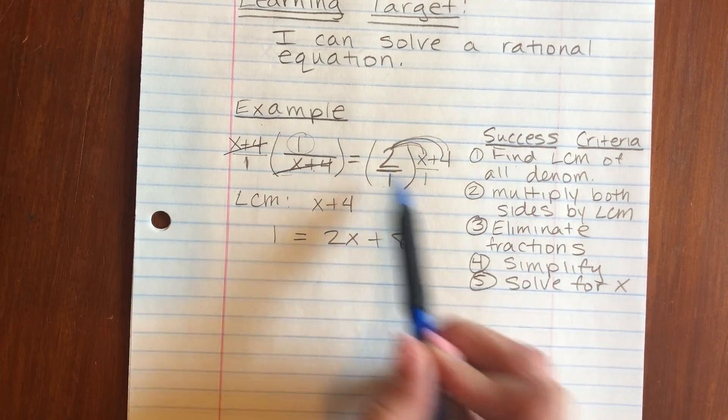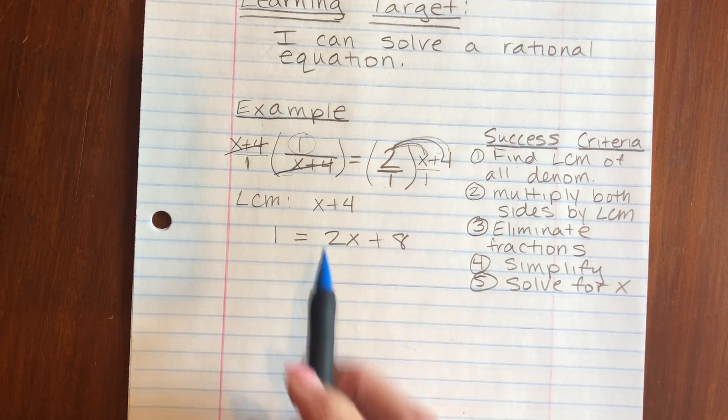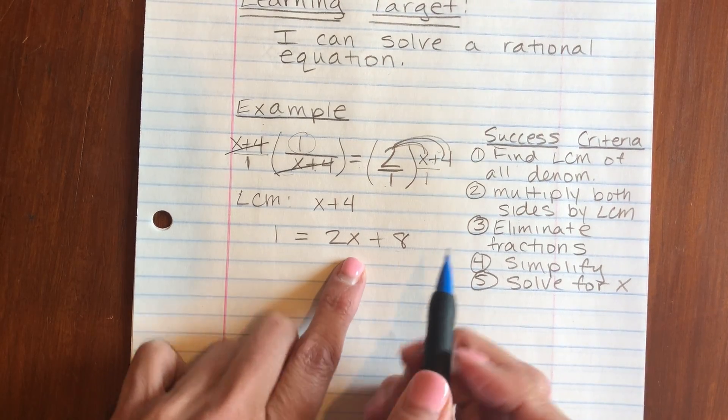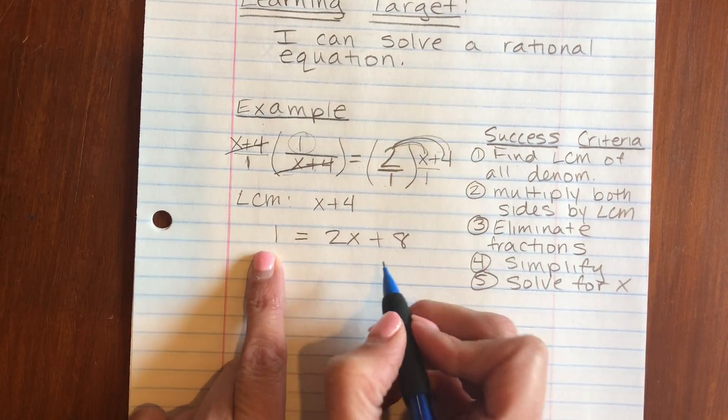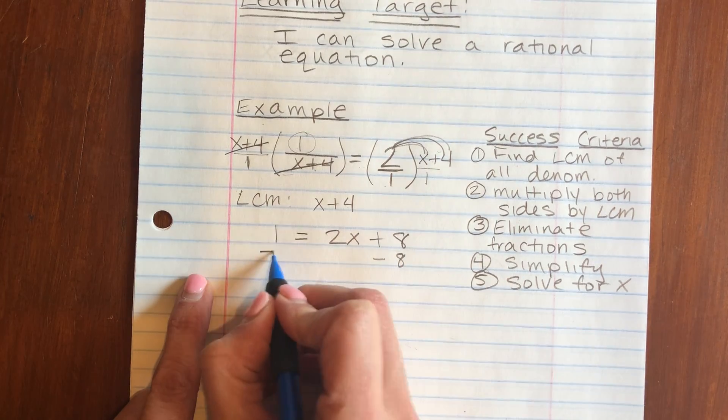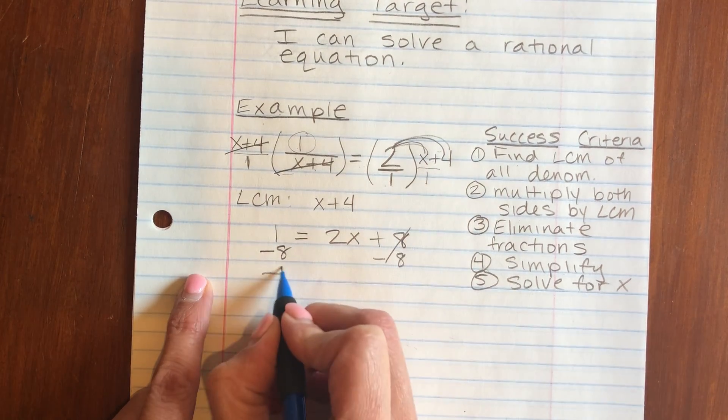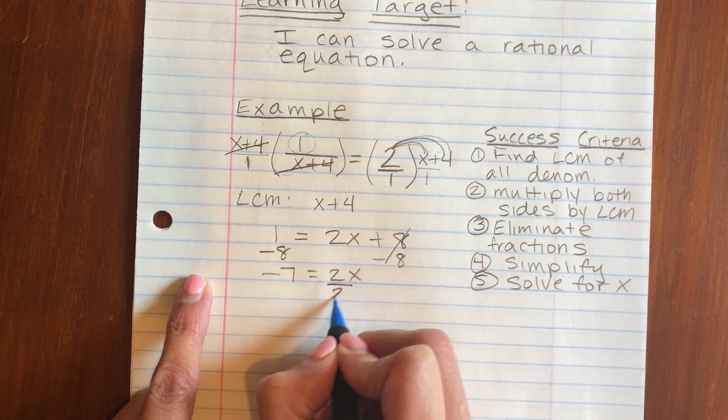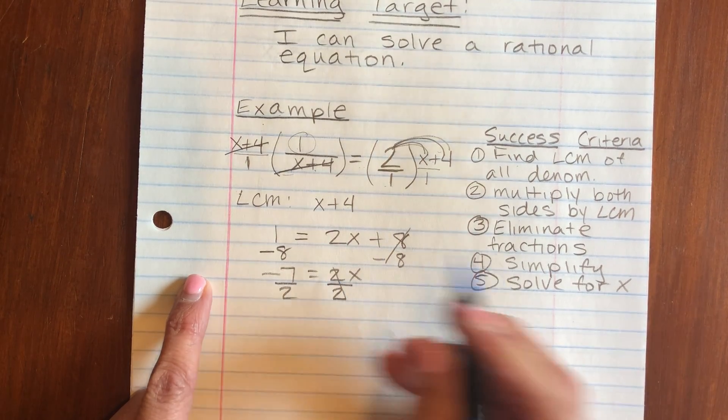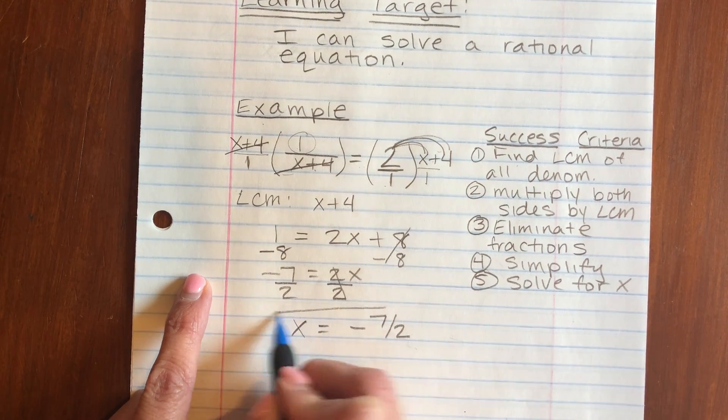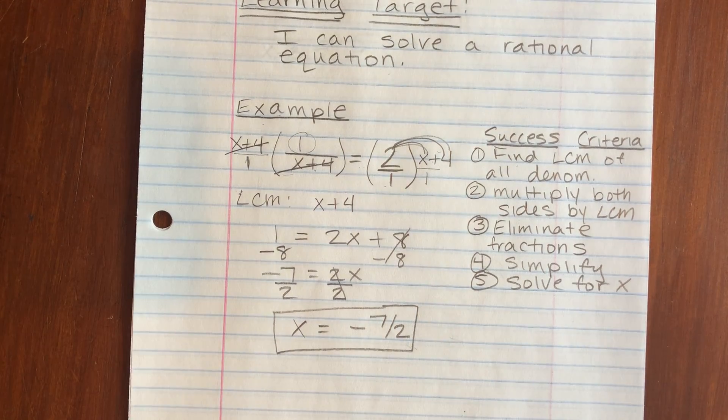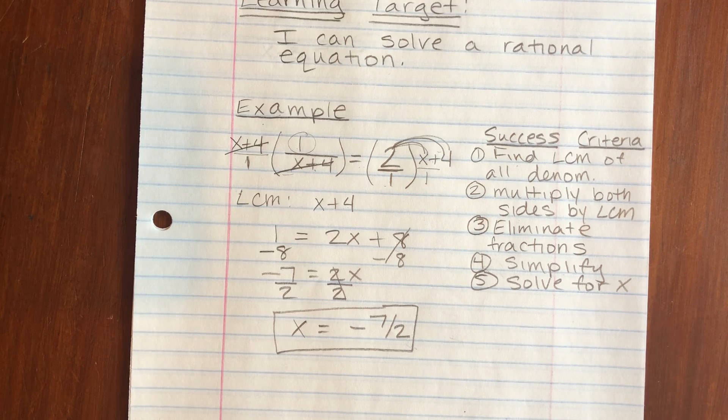And then finally, we need to solve for x. After we simplified and distributed that 2, now we can solve for x, get x by itself. This is a two-step equation. Subtract 8 from both sides first, and then divide by 2. So your answer is x equals negative 7 over 2. And that is it.